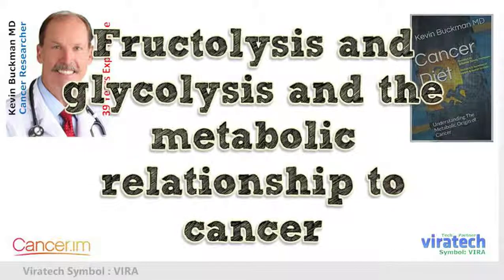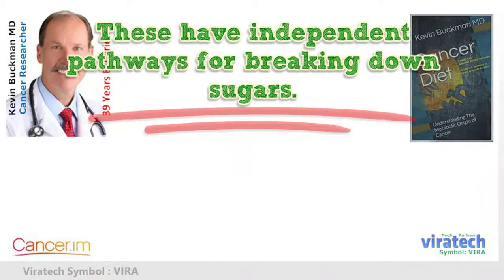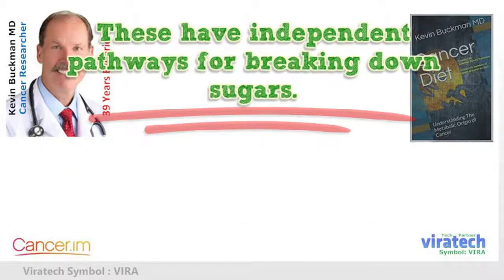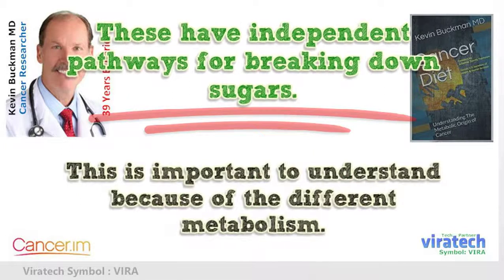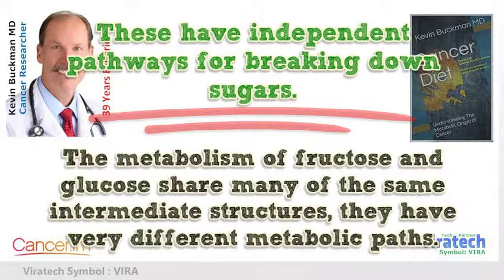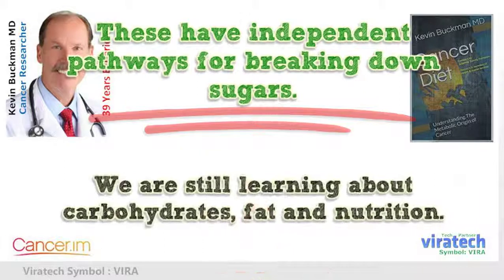Fructolysis and glycolysis are independent pathways for breaking down sugars — 'lysis' means breakdown of an element or compound. This is important to understand because, despite having different metabolisms, fructose and glucose share many of the same intermediate structures while following very different metabolic paths. We are still learning about carbohydrates, fat, and nutrition.